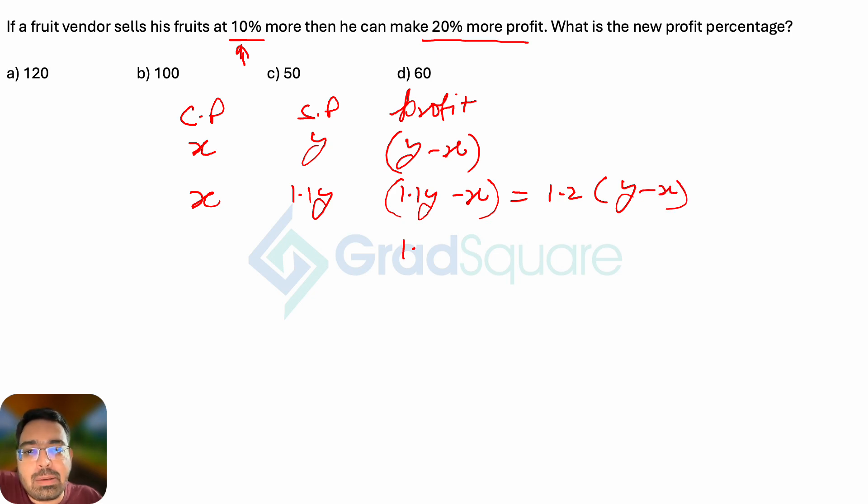So 1.1y minus x should equal 1.2y minus 1.2x. Now go further. What will we get? We'll get 0.2x equals 0.1y.